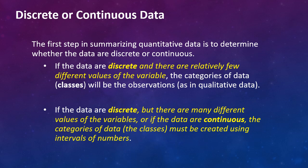First we have to figure out whether we have discrete or continuous data. If the data is discrete and there are relatively few different values of the variable, the categories of data, which we call classes, will be the observations. If the data is discrete but there are many different values of the variables, or if the data is continuous, the classes must be created using intervals of numbers.